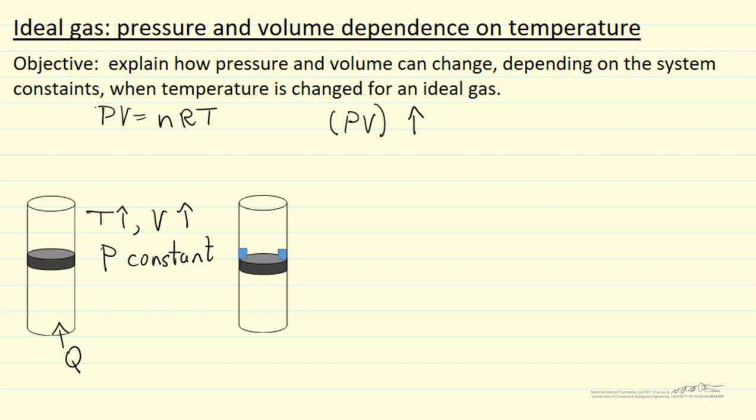Suppose we constrain the system by having stops here, so we're at constant volume. Again we add heat, so the temperature is going to increase. The volume is fixed, but the pressure will increase because the ideal gas law, of course, tells us that. And the volume is constant. That's the second possibility.